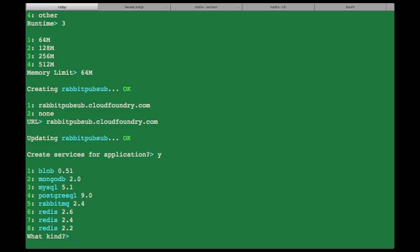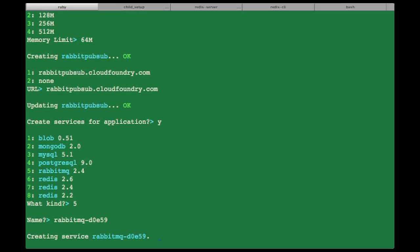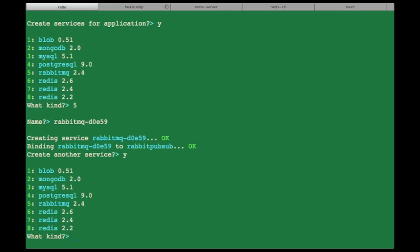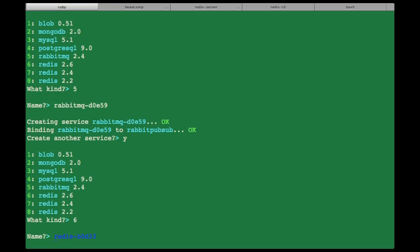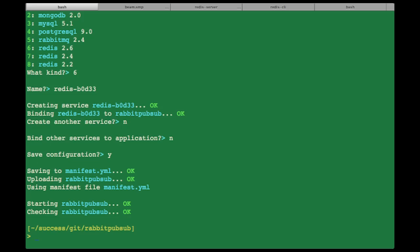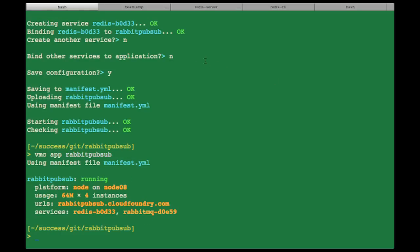I'm going to use four instances, node application, node 0.8, 64MB memory. The URL is fine by me. First I want to use a RabbitMQ service, which is number five. That name is fine by me. Then we also need Redis because we are using Redis as a session store, so let's use Redis 2.6, which is number six. That random name is fine by me. Save configuration? Yes.